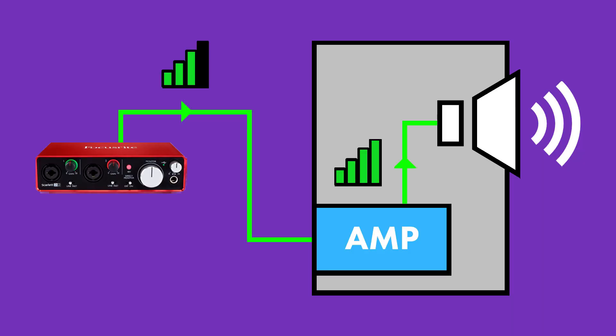Speaker level signal is signal that has been amplified using an amplifier. When you run a line level signal into your studio monitors, the amplifiers built into your speakers boost the signal up to speaker level. Smaller speakers require less volts to produce sound waves, whereas larger speakers require more volts. If you find a speaker level output on a piece of hardware like a power amp, be very, very cautious — connecting this output to a mic, instrument, or line level input on a piece of gear can damage it. Make sure that you only connect speaker level outputs to speaker level inputs.